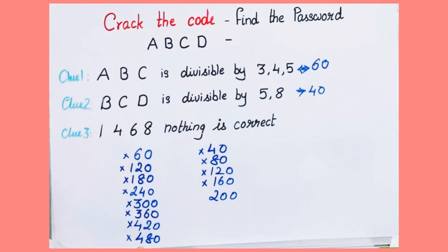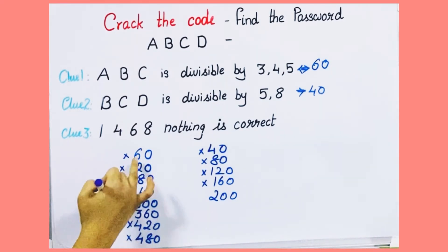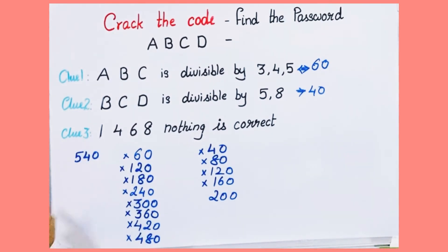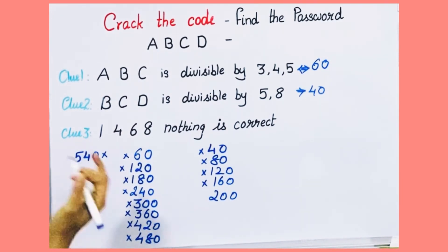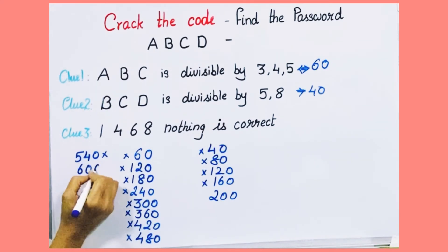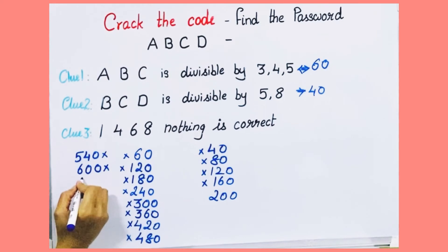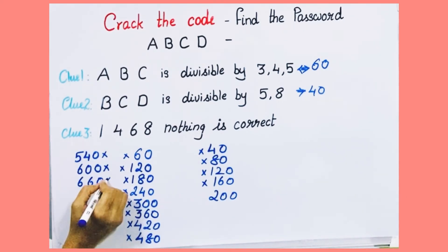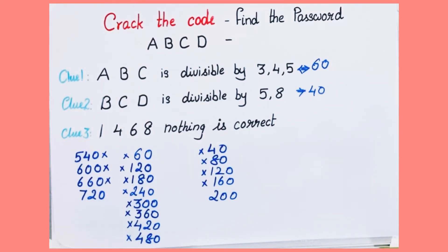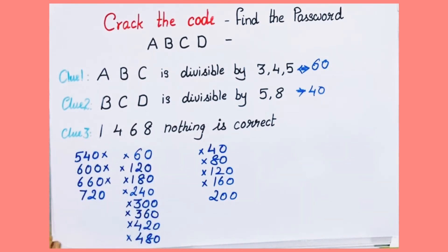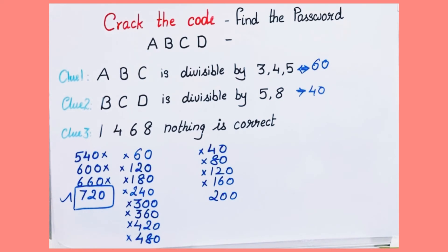Next multiple of 60 is 540 — 4 is there, can't take. Then 600 — 6 is there, can't take. Then 660 — can't take. Next multiple is 720 — yes, because none of the digits 1, 4, 6, or 8 appear in 720, so ABC can be 720.